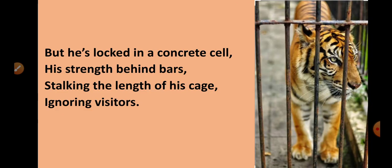Now the fourth stanza: 'But he is locked in a concrete cell, his strength behind bars, stalking the length of his cage, ignoring visitors.' The poet moves back to the tiger locked in the zoo. Concrete means a cemented building, and cell means prison — the poet uses this word to show how the cage feels like a jail to the tiger because he feels imprisoned there. His power is also locked behind bars.